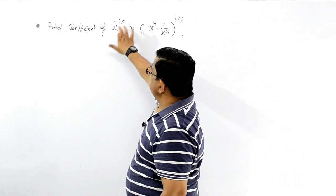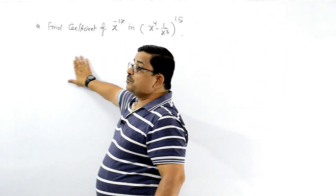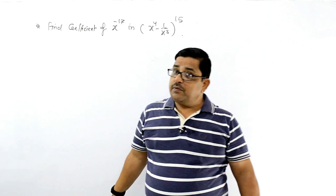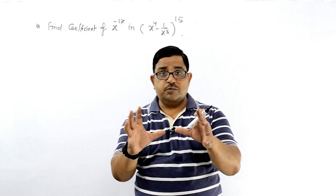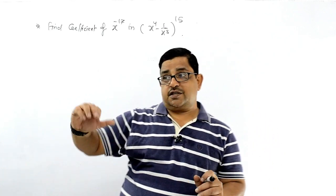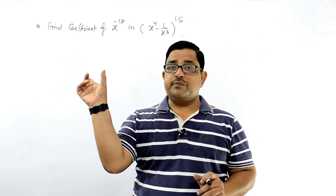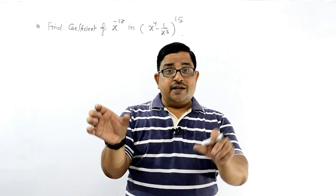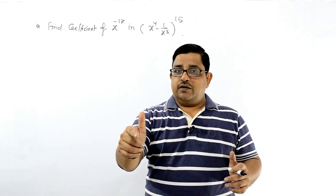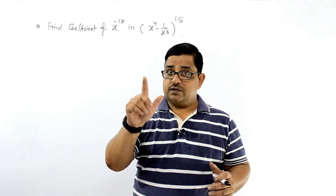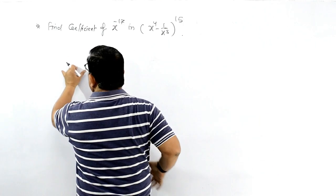x to the power minus 17 का coefficient निकालना है, तो यह general term से ही होगा। पहले हम general term लिखेंगे और general term में यह देखेंगे कि उस पर x की power minus 17 होने के लिए, general term में x पर जो power आएगी उसको minus 17 के साथ compare करेंगे। जैसे ही compare होगा तो r की value decide हो जाएगी, और फिर आप coefficient part निकाल सकते हैं। तो देखें, पहले general term लिखेंगे।